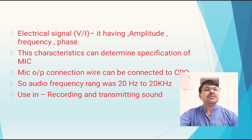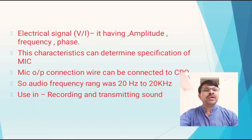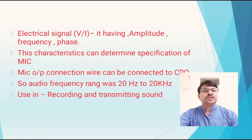The electrical signal output of a microphone must contain amplitude and frequency. The frequency range of a microphone is audible, in the range of 20 Hz to 20 kHz. The microphone output can be connected to a CRO for determining various important characteristics of the microphone sound system. The microphone is used for sound recording and sound transmitting purposes, and is also called a sound recording element.